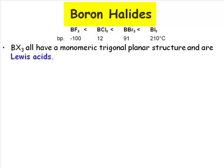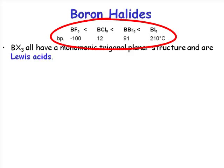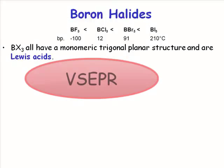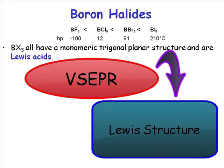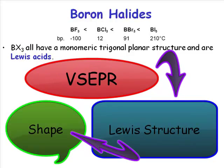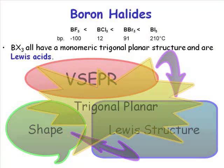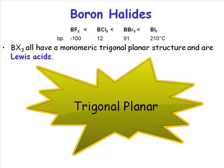The boron halides' properties tend to reflect their molecular weight. As you go up in molecular weight, you get a less and less volatile material. If you were to do a VSEPR analysis on the boron halides — first drawing a Lewis structure and then using that to predict the shape of the molecule — you would conclude that all the boron halides would be trigonal planar in shape. And indeed, they are.